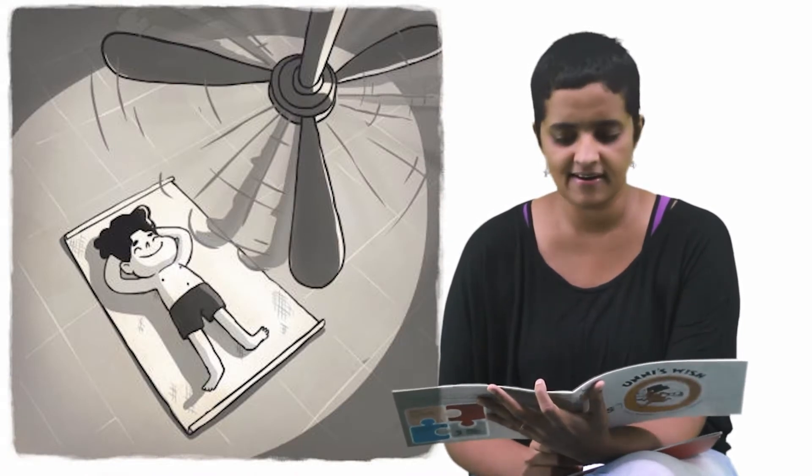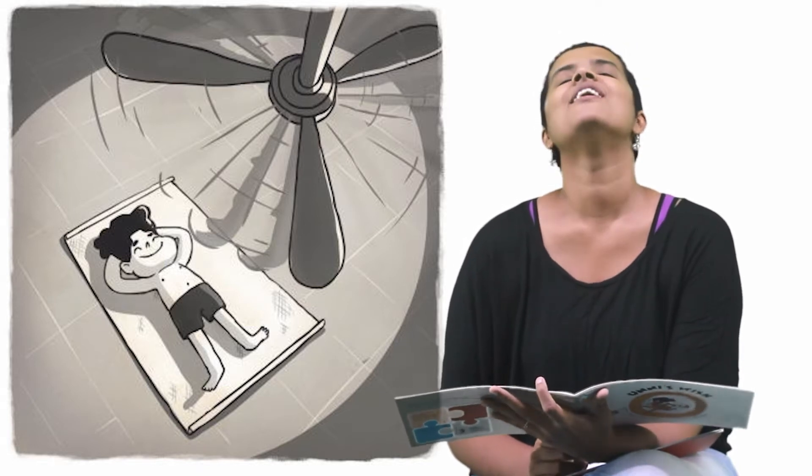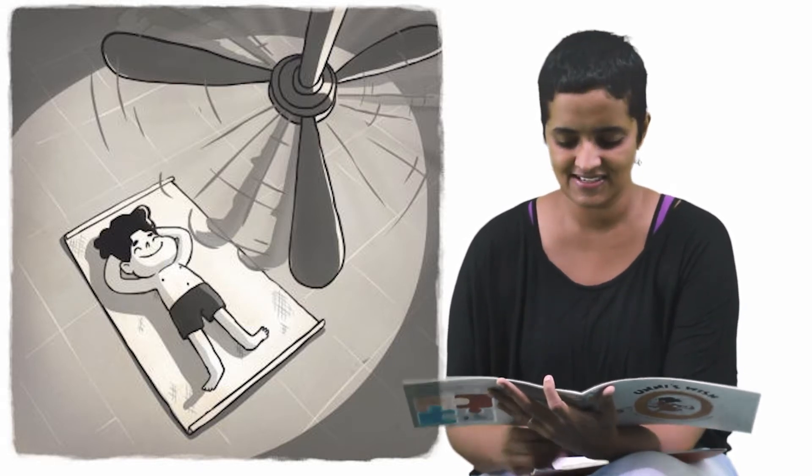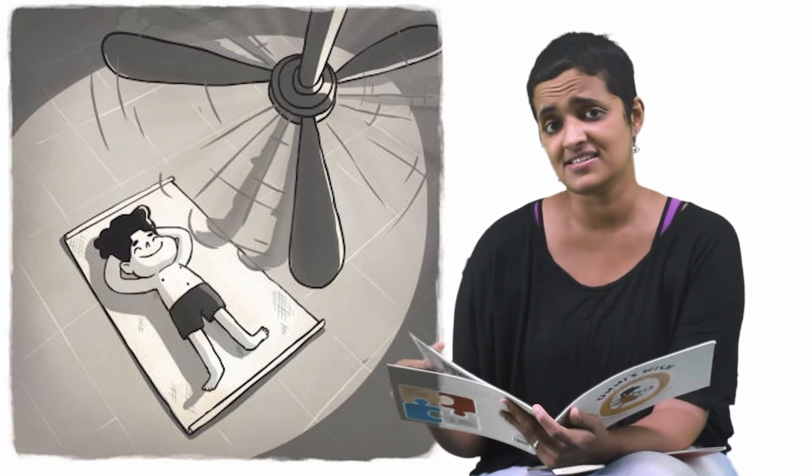The school bell rings. Unni and Ammu hurry to catch the bench under the fan. Ah, what a wonderful breeze. Unni imagines sleeping under a fan at home. It would be great in the summer.